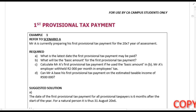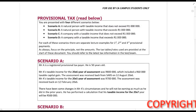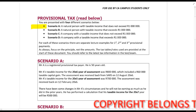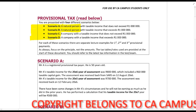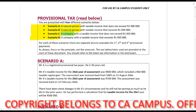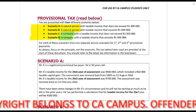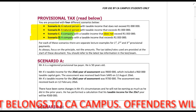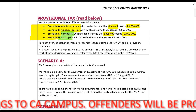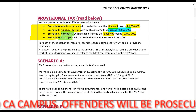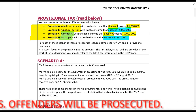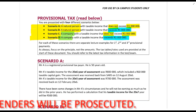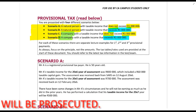We are now going to be looking at the first provisional tax payment. For all of the provisional taxes, I've provided four scenarios: Scenario A, B, C, and D. Scenario A and B are for natural persons and Scenario C and D for companies. Scenario A and C is where the taxable income does not exceed a million, and Scenario B and D exceeds a million, showing the different ways the calculation is performed.